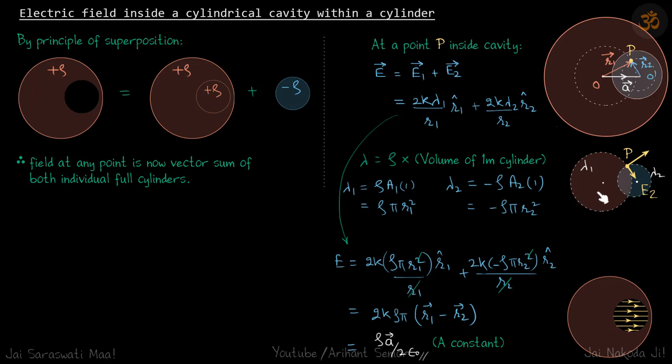Due to the first one the electric field is going to be in this direction. Let's call it E1. Due to the smaller cylinder the field is going to be towards its center because it's negatively charged. Let's call it E2. You can see that E1 has to be greater because this volume is larger than this one.